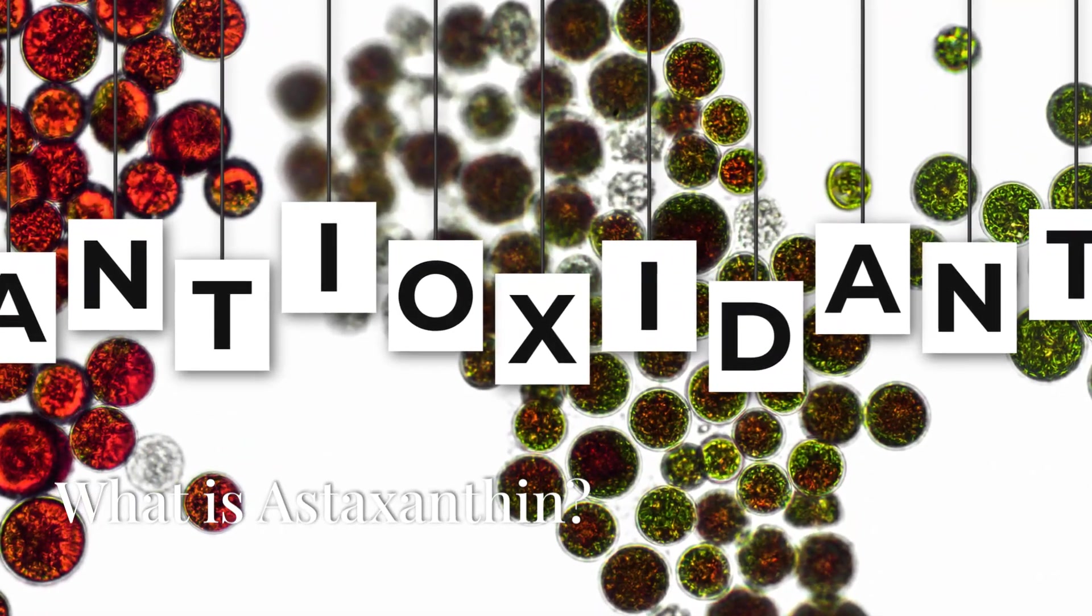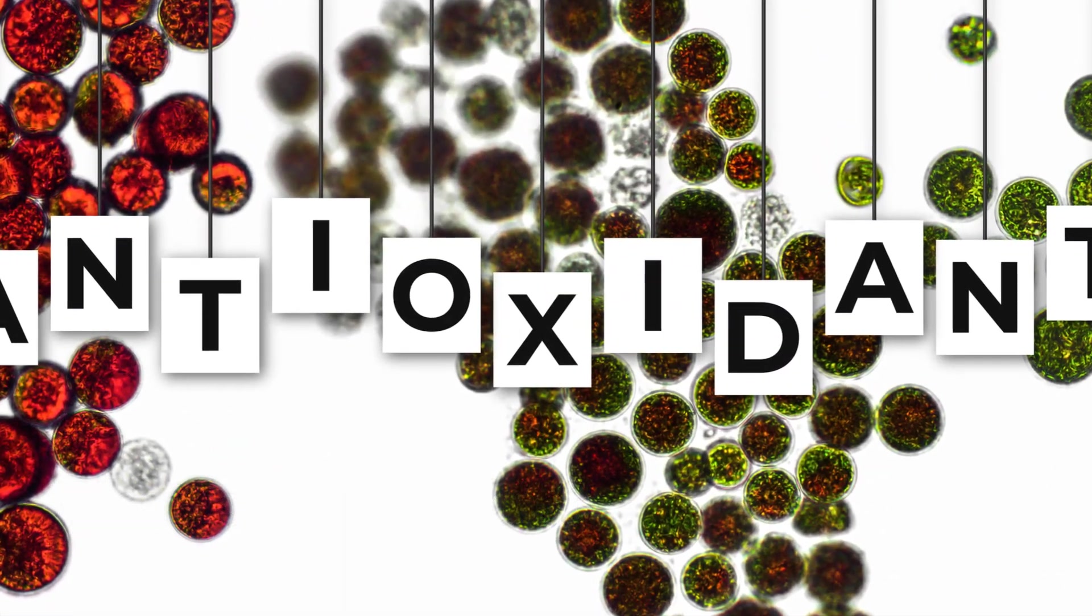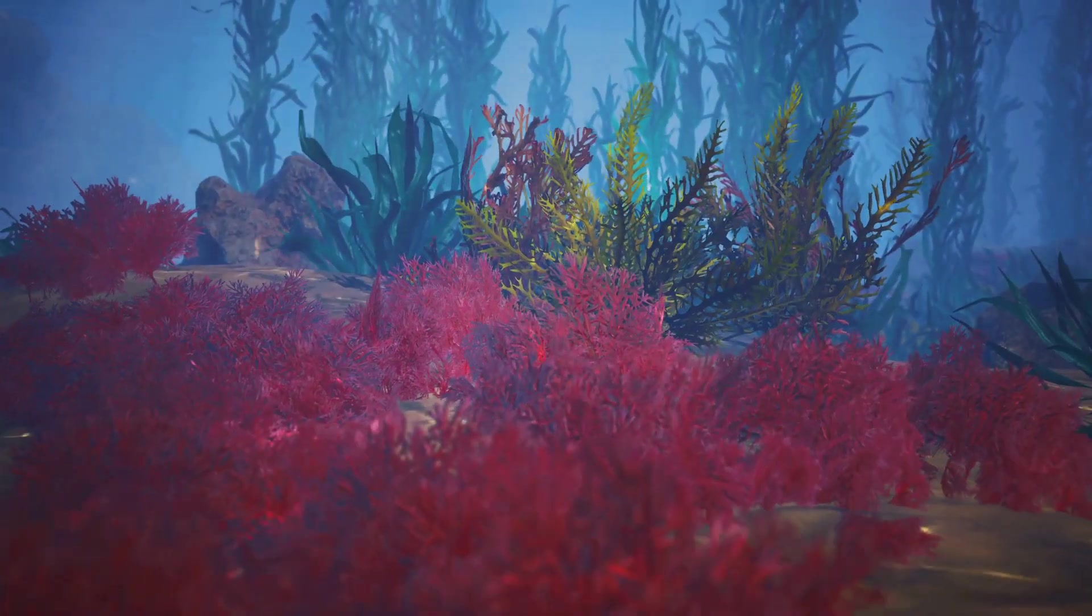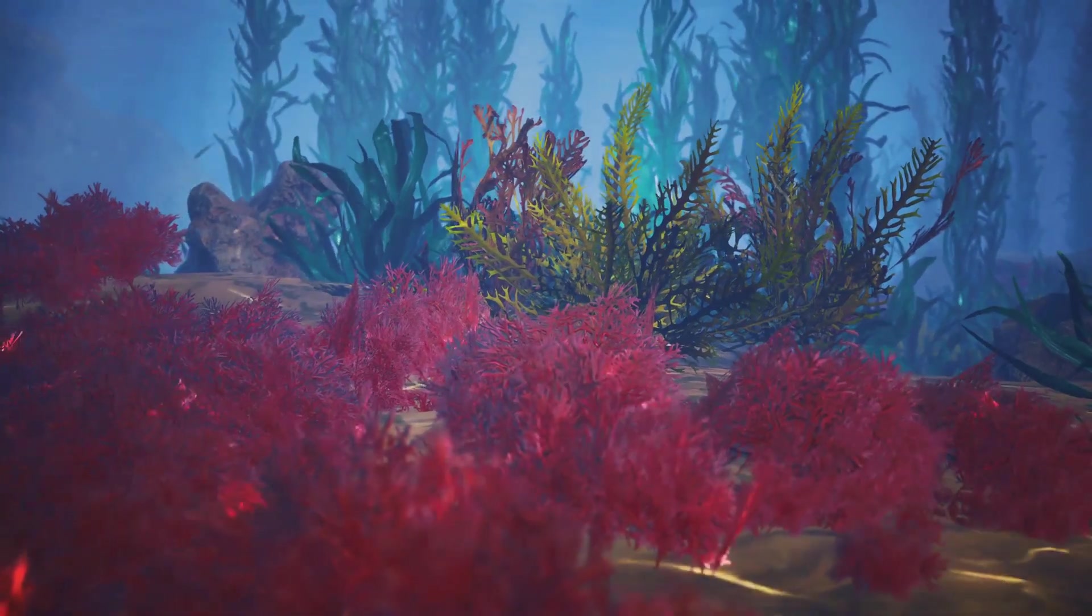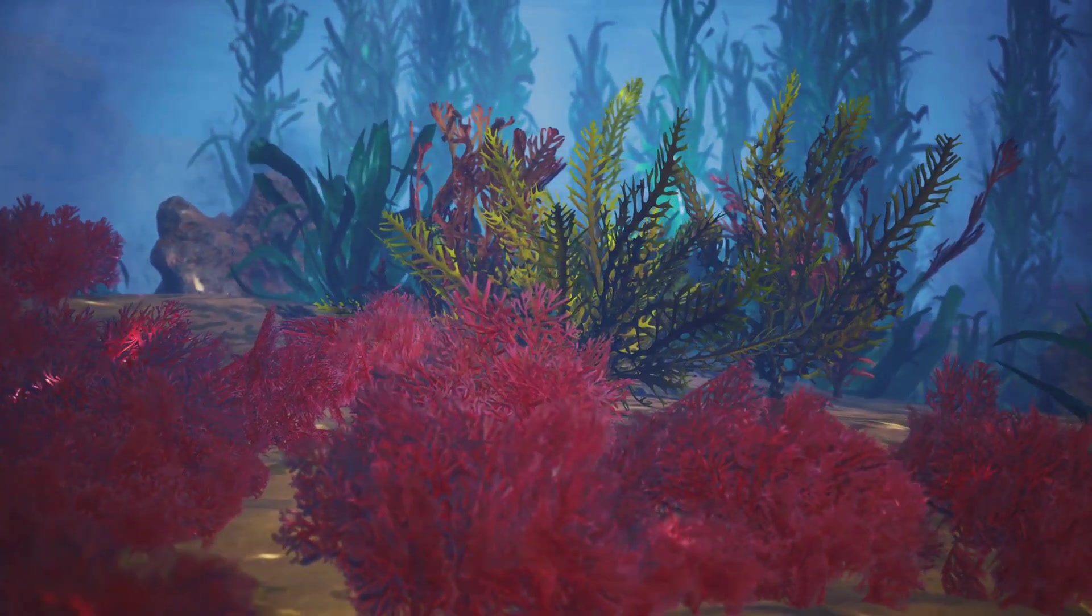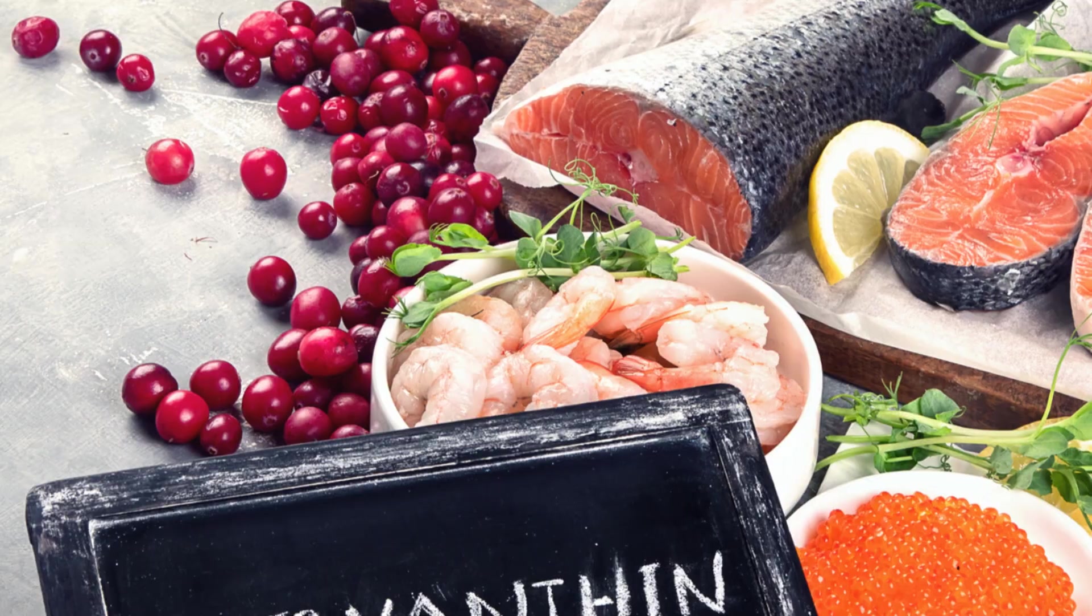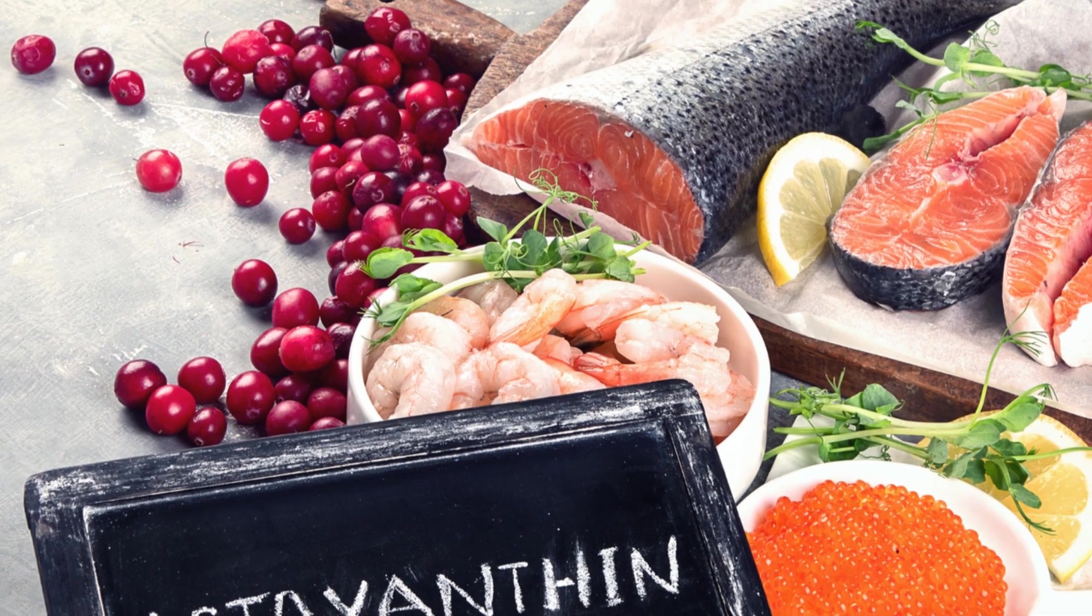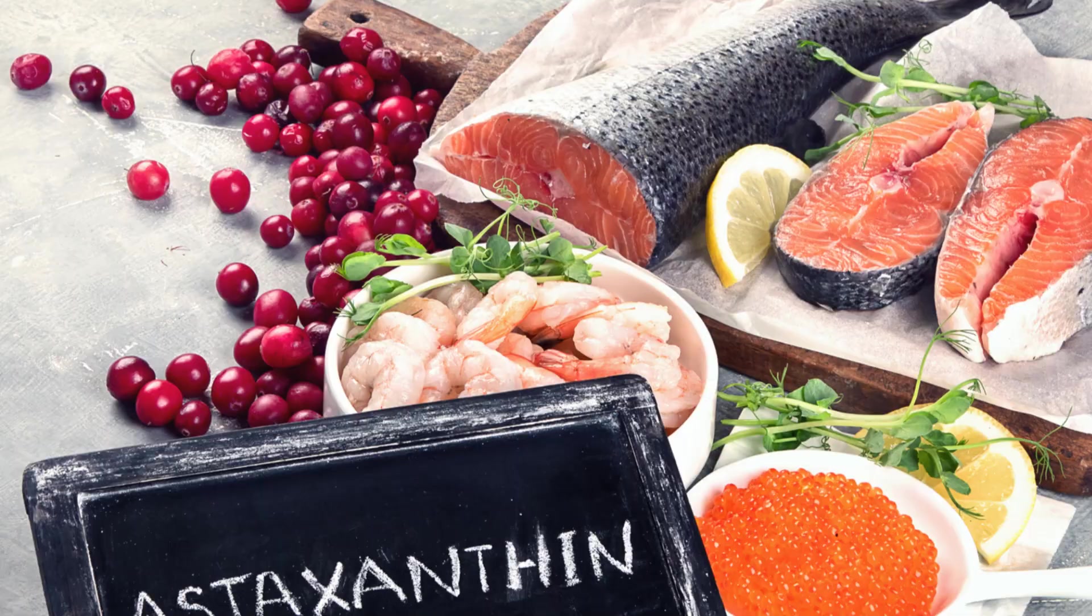Astaxanthin is a red-pink pigment belonging to the carotenoid family. This remarkable compound is found naturally in certain marine organisms, including microalgae, yeast, salmon, trout, krill, shrimp, and crayfish. Its vibrant color is not just for show. It signifies the presence of one of the most powerful antioxidants known to science.